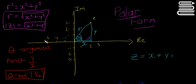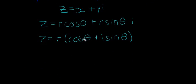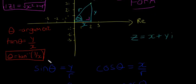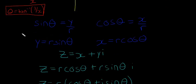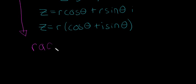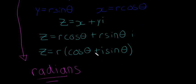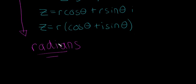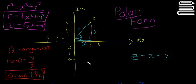Now we should be able to find the polar form of any complex number given in rectangular form. One important thing about the argument: it must always be in radians, not in degrees. There'll be another video on radians if you're unsure what they are, but just remember the argument is always in radians. I hope this video cleared up the polar form — see you next time.